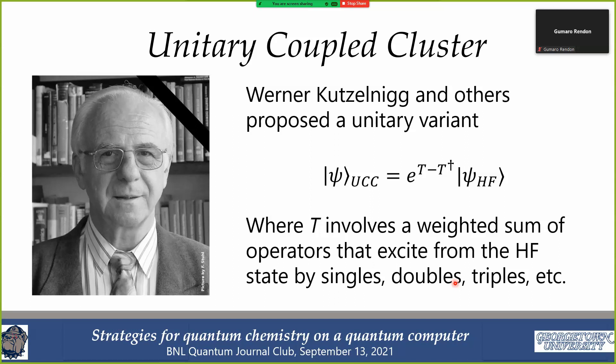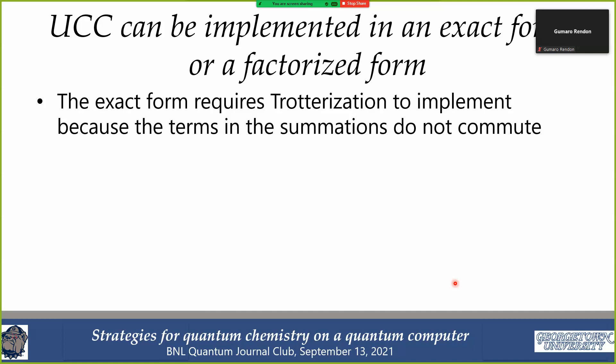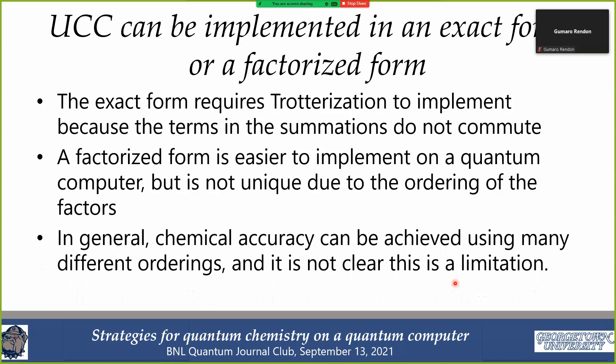One way to implement this is in a factorized form. The exact form with all operators in one exponential has no quantum circuits to evaluate it, so instead we trotterize using a string of individual exponential factors. In the factorized form, it's not unique because ordering matters, but the variational principle gives enough freedom that a reasonable ordering yields a good energy. In chemistry we're not trying to get the exact energy — we want chemical accuracy, which is sufficient to do something useful.